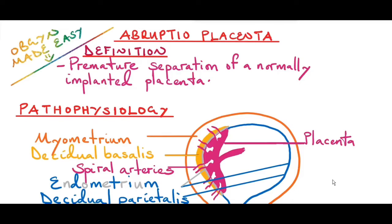Hi guys, welcome back to my channel OBS and Guide Made Easy. In today's video I'm going to discuss abrupta placenta, also known as placenta abrupta. It is one of the causes of antepartum hemorrhage. Remember we discussed causes of antepartum hemorrhage in my video on placenta previa.